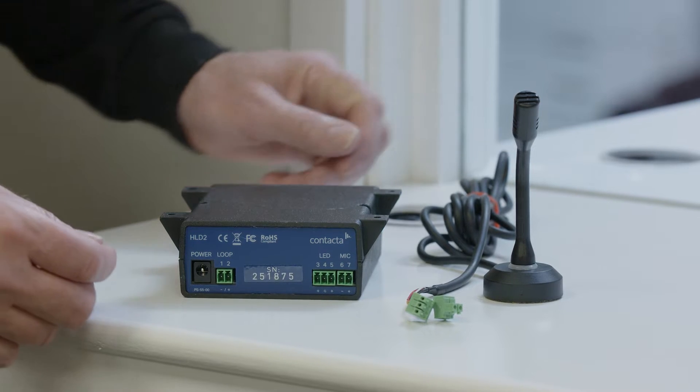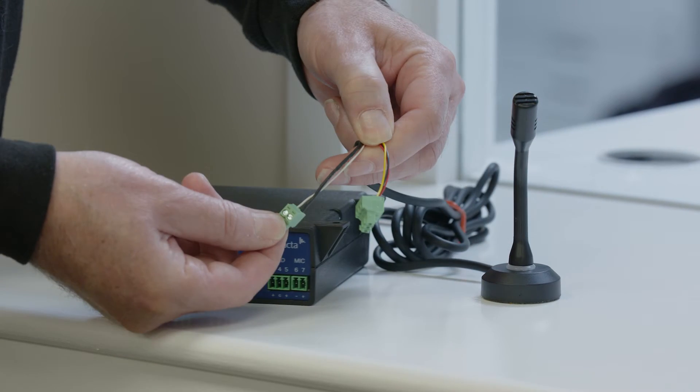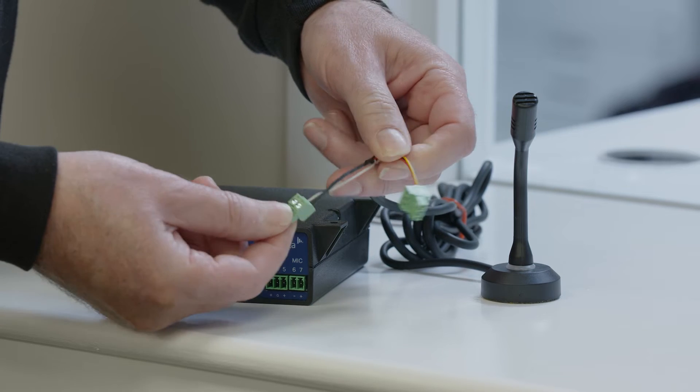Connect the M72 microphone to the HLD2 hearing loop driver. There are two connectors, one with a white cable for the microphone, one with a yellow and red cable for the LED.